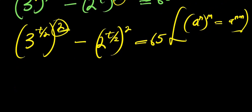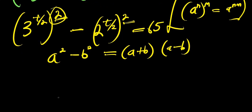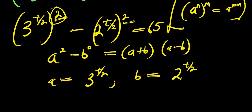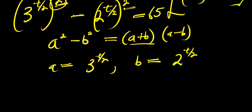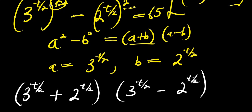At this point we have a squared term and another squared term with a minus between them, so we can make use of the difference of two squares: a squared minus b squared equals (a plus b)(a minus b). In this case, a equals 3 power t over 2, and b equals 2 power t over 2. So we have (3^(t/2) + 2^(t/2)) times (3^(t/2) - 2^(t/2)) equals 65.